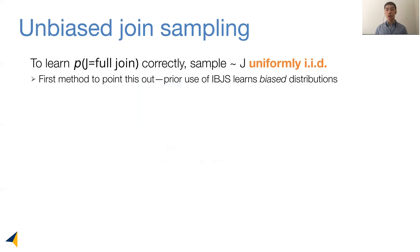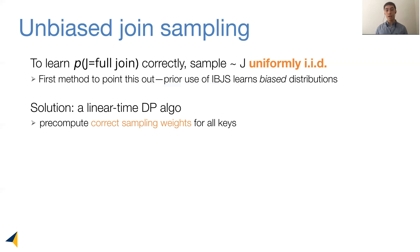One challenge we have to solve in sampling is to make sure the samples are uniform and IID. In fact, NeuroCard is the first method to formalize this statistical correctness requirement, while prior learned estimators use a biased sampler such as IBJS. To make sure this requirement is satisfied, our solution is to precompute the correct sampling weights for all join keys. This can be done with an efficient linear-time dynamic programming algorithm, and these correct weights will ensure the uniform IID requirements are satisfied.